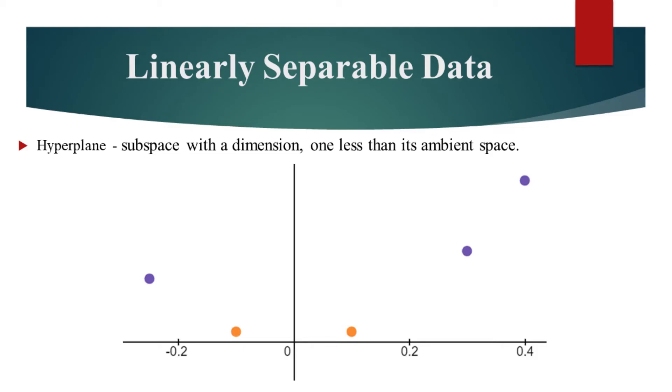Maximum Margin Classifier can be used to classify data similar to what's shown on the graph. Here, orange and violet points belong to two separate classes. The idea is to find a hyperplane that best separates the classes.